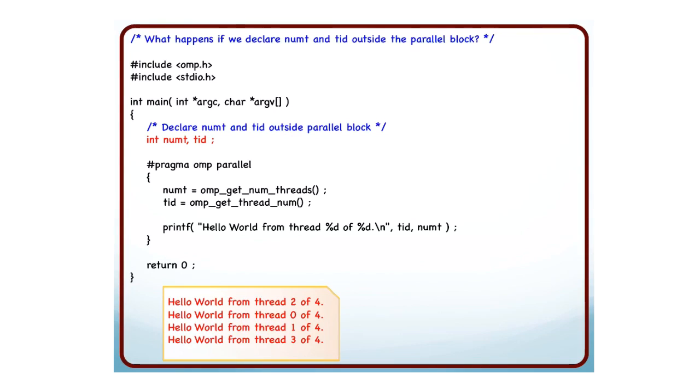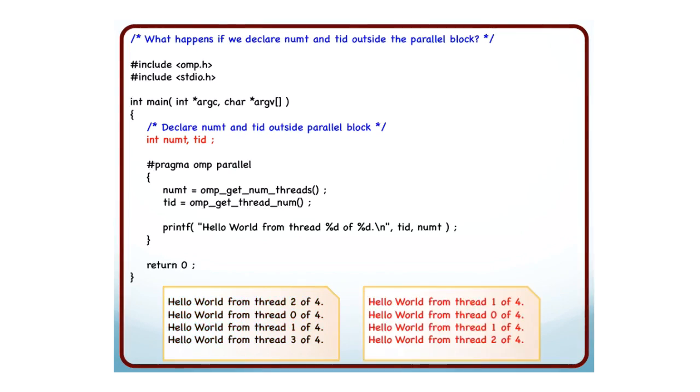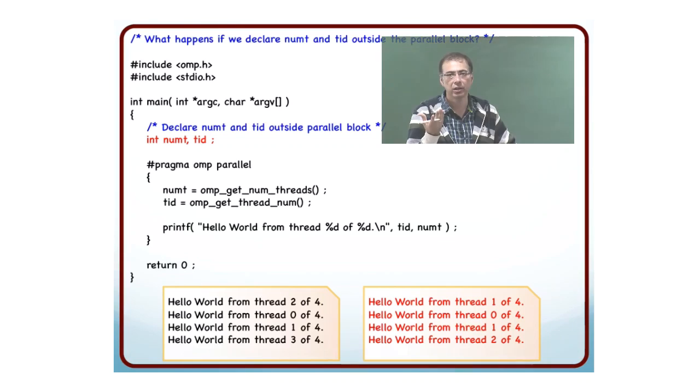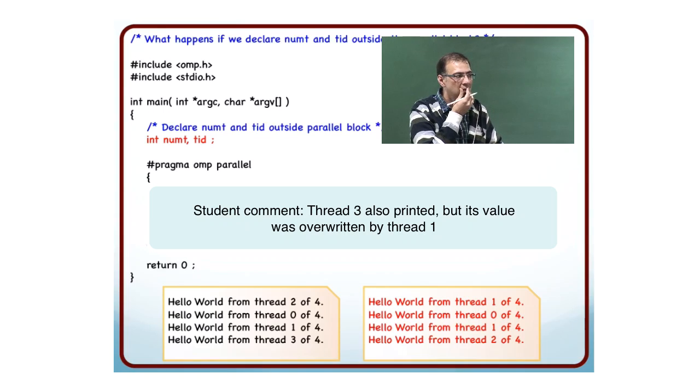So when I run this code, I get the output that I expected. I run it again. I get some other output. Why has this happened? Thread 3 never printed anything and thread 1 printed twice.